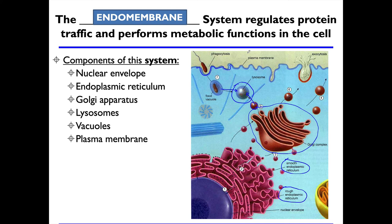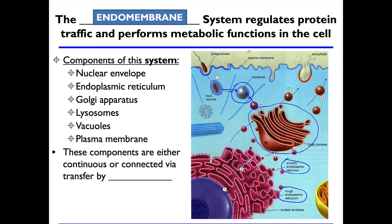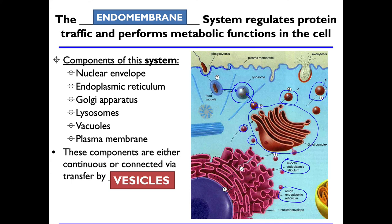We're getting into the organelles of eukaryotic cells — eukaryotic cells have membrane-bound organelles, so they're made of membrane. These components are either continuous or connected via transfer by vesicles. The direction of flow goes from the inside to the outside of the cell. These little spherical droplets are your vesicles, carrying materials from the endoplasmic reticulum to the Golgi or from the Golgi out to the exterior of the cell.